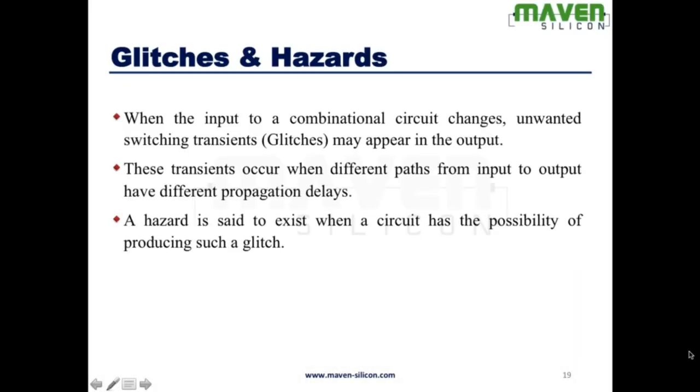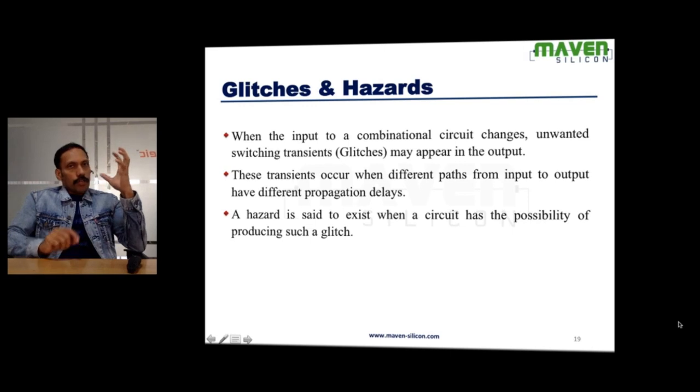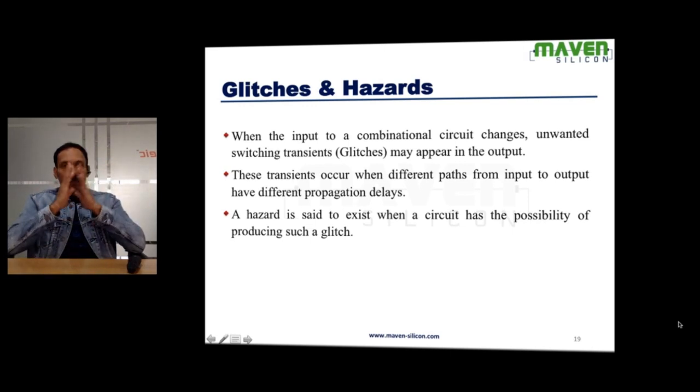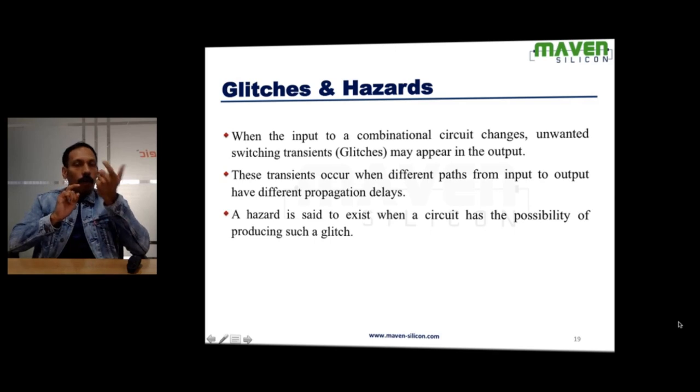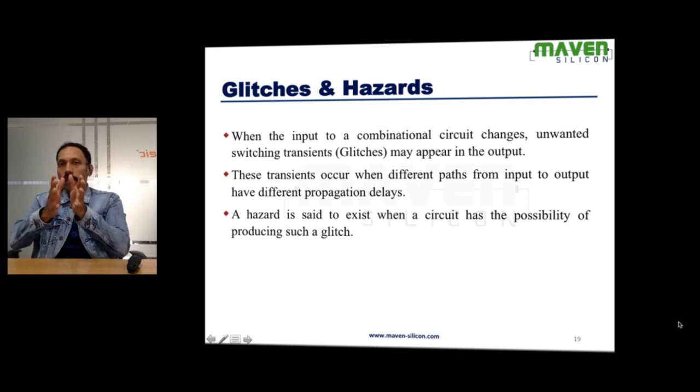Glitches and Hazards. Let's say you have designed a combinational circuit which has different paths with different delays. What it means is the delay of all the paths from input to output is not same. In this case, the circuit might produce some unwanted switching transitions at the output and we call these switching transitions as glitches.